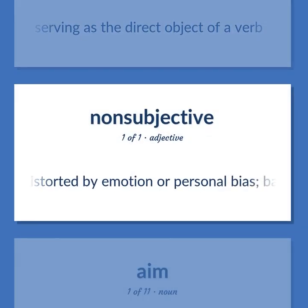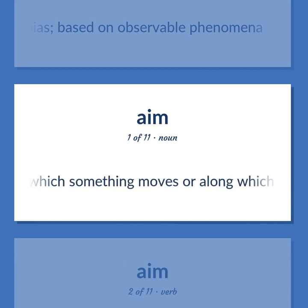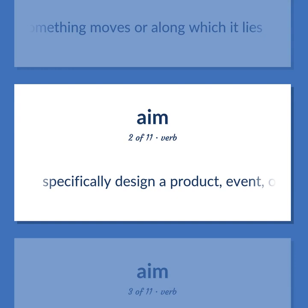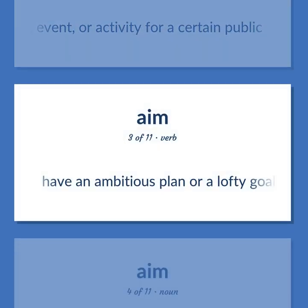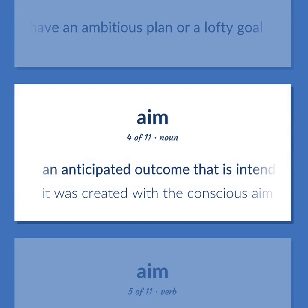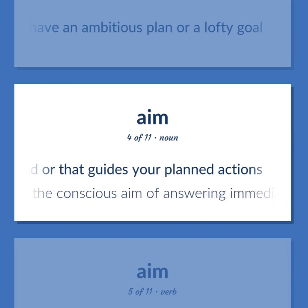Undistorted by emotion or personal bias, based on observable phenomena. The direction or path along which something moves or along which it lies. Specifically design a product, event, or activity for a certain public. Have an ambitious plan or a lofty goal. An anticipated outcome that is intended or that guides your planned actions. It was created with the conscious aim of answering immediate needs.